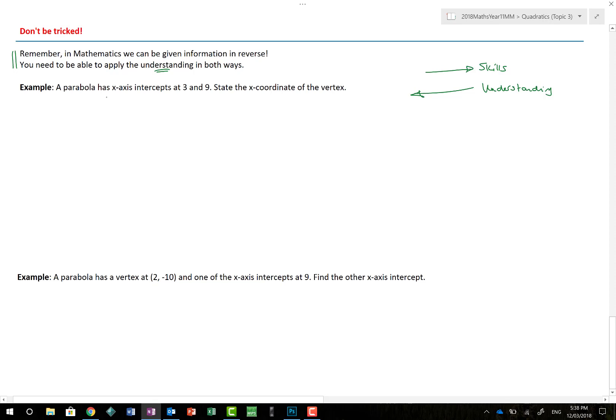You're now told a parabola has x-axis intercepts at 3 and 9. State the x-coordinate of the vertex. Well, firstly, what is a vertex? Vertex is a corner. It's a turning point. It's the minimum, maximum. So, I now know that it's got an x-axis intercepts at 3 and 9. I want to find the x-coordinate of the vertex. Well, that's the centre point. How do I find the centre point? You take these two values, you add them together and you halve it, which gives me 6. And because it just wants the x-coordinate, you would have written your answer as x equals 6.